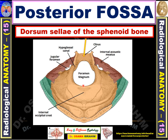The posterior fossa connects with the spinal canal through the foramen magnum. There are also many foramina in the skull base, including the internal acoustic meatus, jugular foramen, and hypoglossal canal. The posterior fossa is composed of the occipital bone and temporal bone laterally, with the dorsum sellae making the anterior and medial boundary.